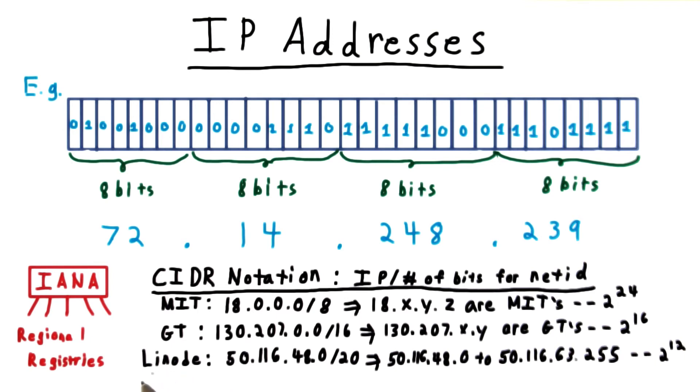At the time of this recording, a New Jersey company called Linode has been allocated the address range 50.116.48.0/20. This gives them 12 bits of host and the range 50.116.48.0 to 50.116.63.255, about 2 to the 12th IPs.